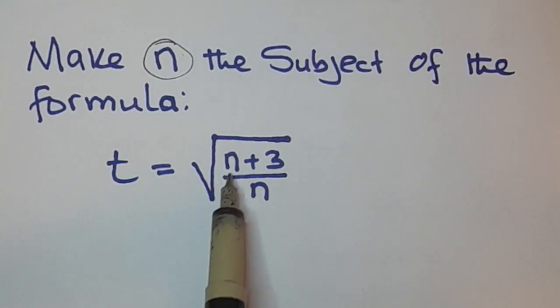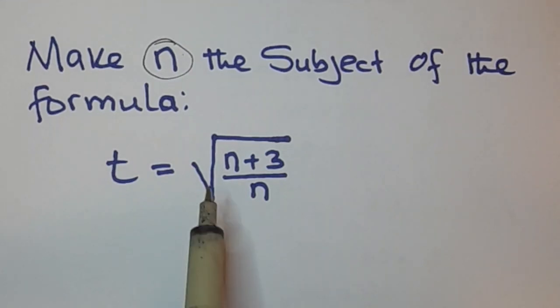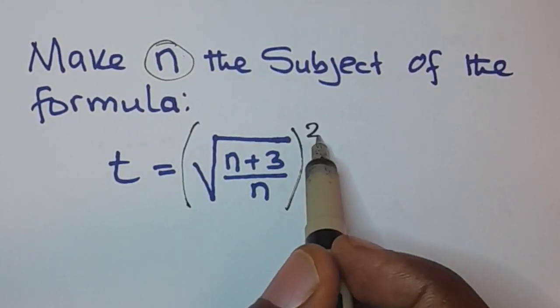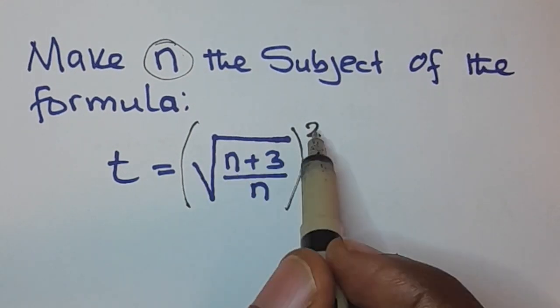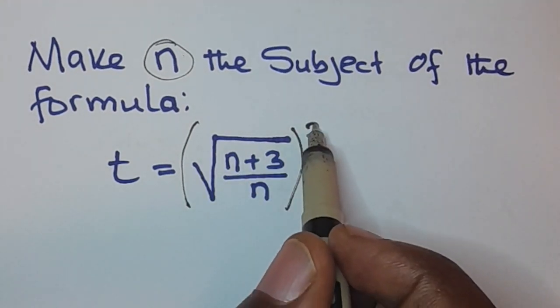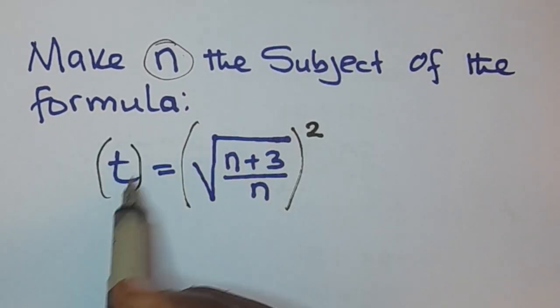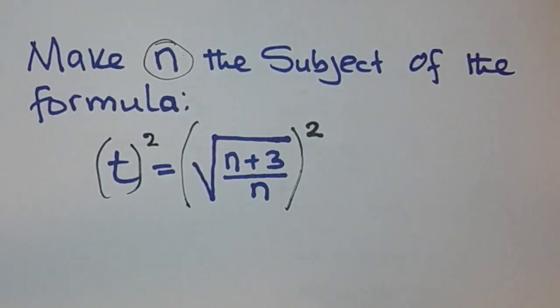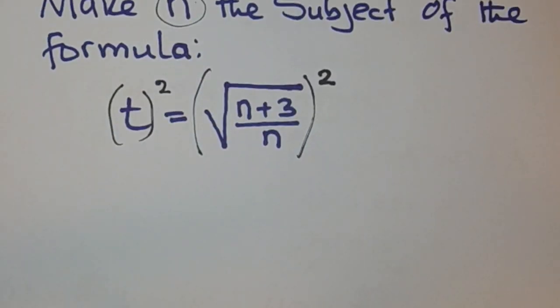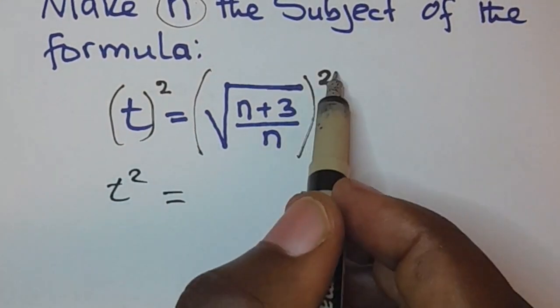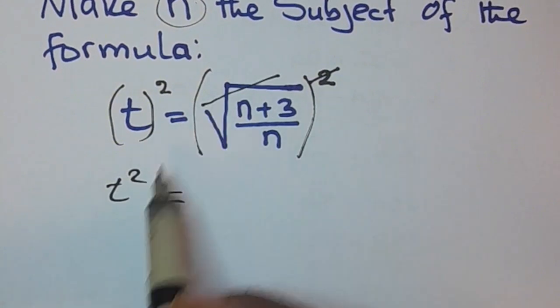The first step: when you look at the right-hand side of this equation, you have a square root. To remove this square root, you square both sides. What you've done on the right, you also do on the left. On the left, you remain with t squared is equal to—the power and square root symbol cancel—you remain with n plus 3 over n.